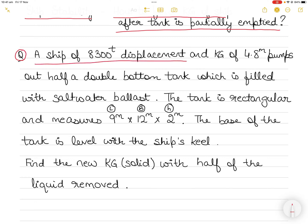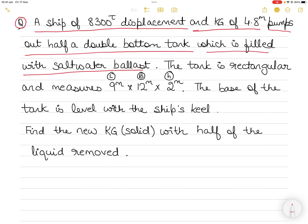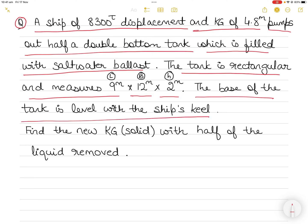The question states: there is a ship of 8300 tons displacement which has an original KG of 4.8 meters. This ship pumps out half a double bottom tank which is filled with salt water ballast. The tank is rectangular in shape with dimensions 9 meters length, 12 meters breadth, and 2 meters height. The base of the tank is level with the ship's keel. We need to find the new KG solid — meaning no free surface effect is being taken into account — with half the liquid removed from the tank.